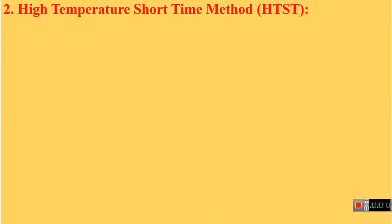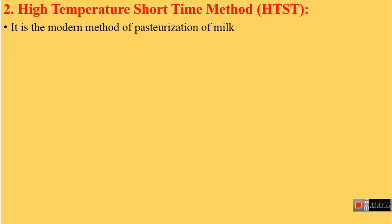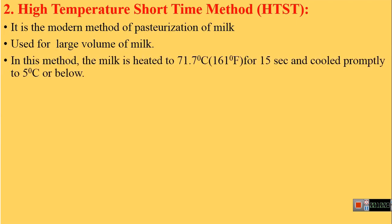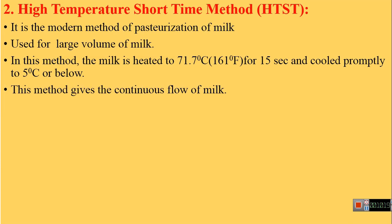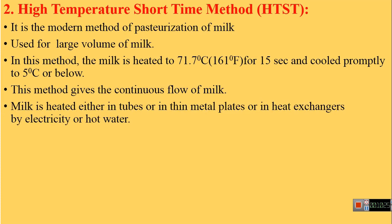The next method is the High Temperature Short Time (HTST) method — the modern method of pasteurization, specifically used when large volumes of milk are to be pasteurized. In this method, milk is heated to 71.7°C (161°F) for 15 seconds and immediately cooled to 5°C or below. This is a continuous process. The milk is heated either in tubes, thin metal plates, or heat exchangers using electricity or hot water.